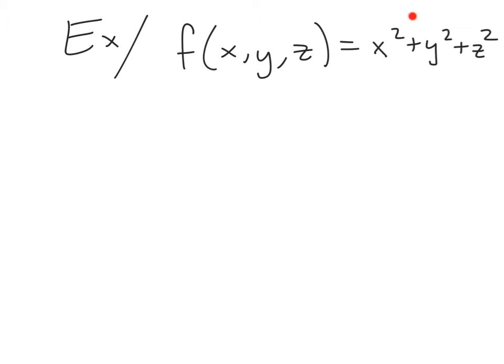For example, consider the function f of x, y, z is equal to x squared plus y squared plus z squared. This is a function that is 0 at the origin, which is the smallest value that it's able to reach, and increases away from the origin.